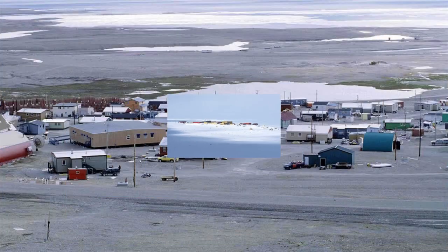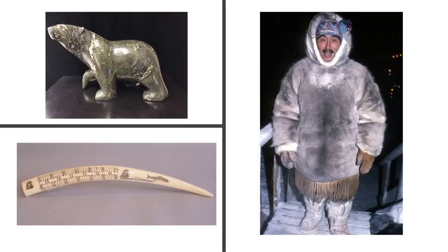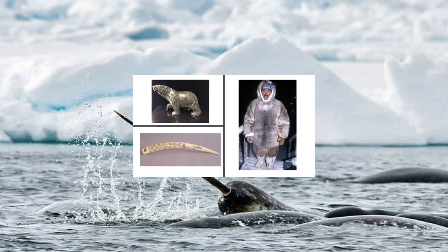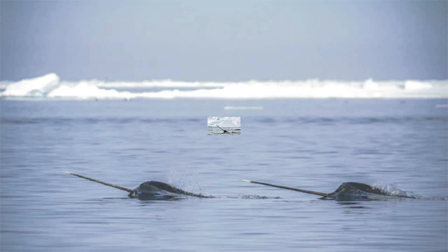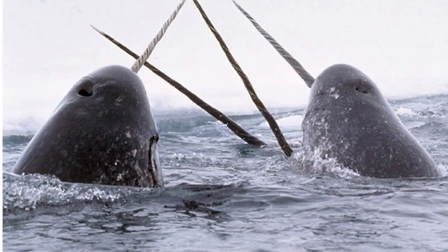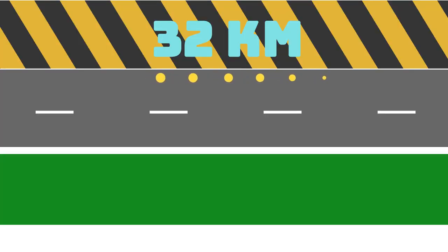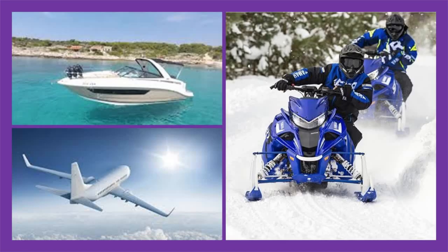Nunavut is known for its indigenous Inuit people's artwork, carvings, and handmade clothing. Roughly 75% of the world's narwhal population migrate into Nunavut's islands and shallow bays. The entire territory has just under 32 kilometers of paved road — to get to communities, people use planes, boats, and snowmobiles.